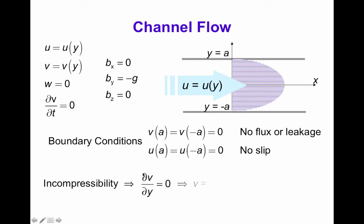Using incompressibility, which reduces to ∂v/∂y = 0, implying v equals constant. Since v equals zero on the boundaries, v is zero everywhere. Without having to assume there's no y-component, we use incompressibility to show this is true, provided u and v are only functions of y, not changing in x or time, with nothing happening in the z-direction.